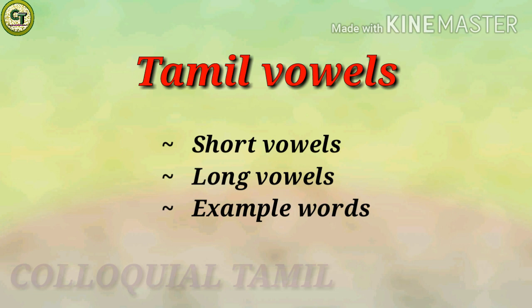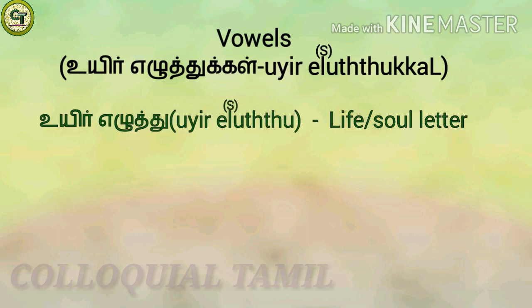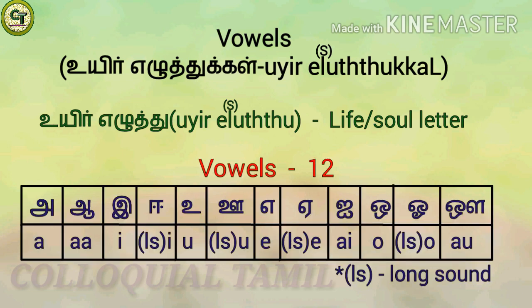In Tamil, vowels are called 'weir eluttukkal'. 'Weir' means life, 'elutt' means letter, so vowels are also called life letters or soul letters. There are 12 vowels in Tamil. Let's see how to pronounce them.